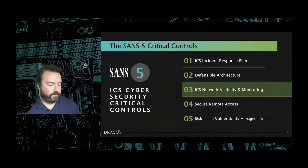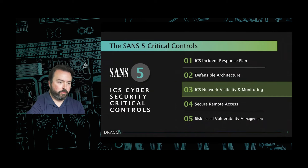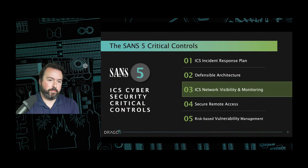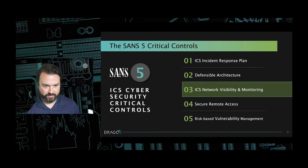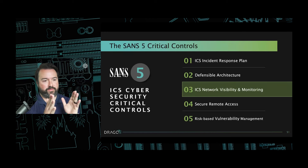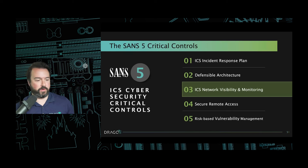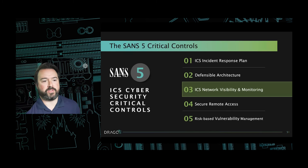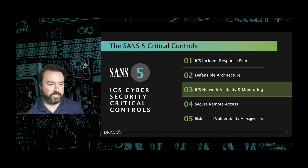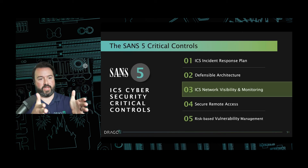Over the last year or so, we've been talking around this concept, and SANS put out a white paper around the five critical controls. We get the question often: where do I start? SANS came up with this very prescriptive set — if you do these five things and start down this journey, you're going to be well on your way to securing OT. There are so many different controls out there: do I focus on encryption? Do I focus on endpoint detection? These five are what we say you should focus on.